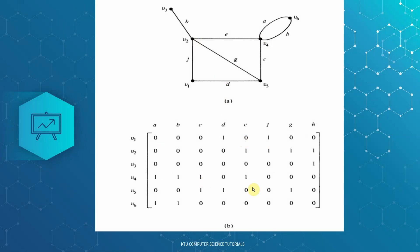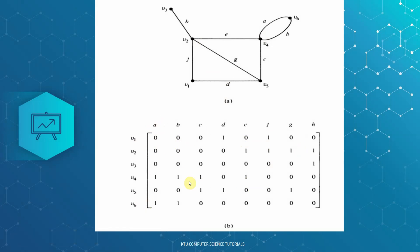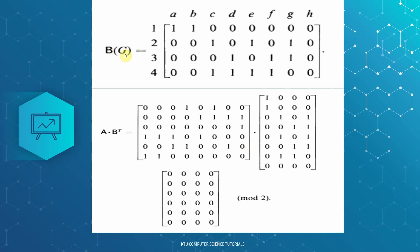This is the incidence matrix. The fundamental premise is vertices by edges, so from v1 to v6 vertices, the vertices and edges are represented. This is the incidence matrix. Now if you have a graph here, the circuit matrix is B of G for the circuits. The property is A into B transpose, where A is nothing but the incidence matrix, and B transpose is the transpose of the circuit matrix.